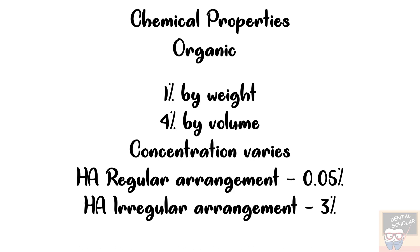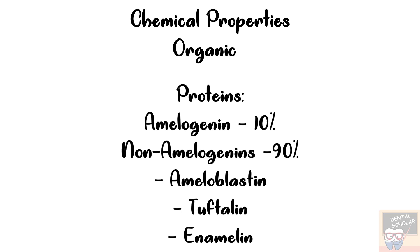The organic portion is mainly enamel proteins. And of these proteins, amelogenin forms about 10% and non-amelogenins about 90% of the organic matrix. The non-amelogenins are a group of proteins like ameloblastin, tuftelin and enamelin. For more detail on enamel proteins, do watch my video on amelogenesis.